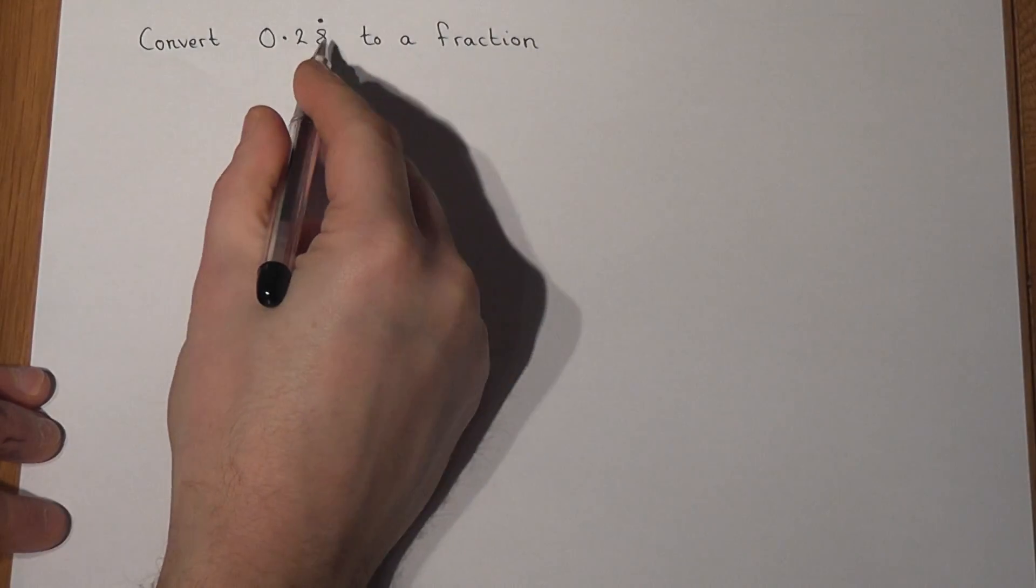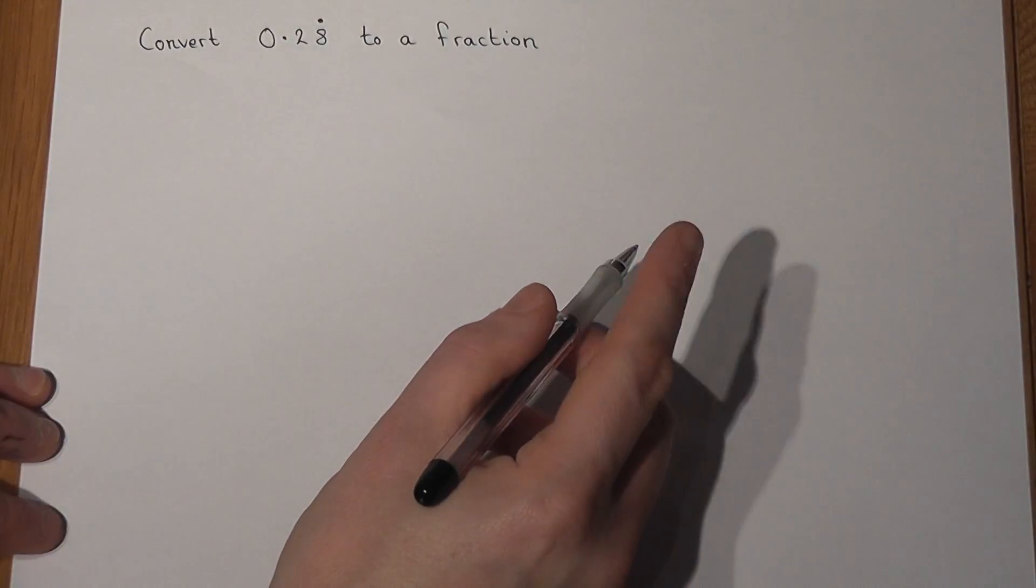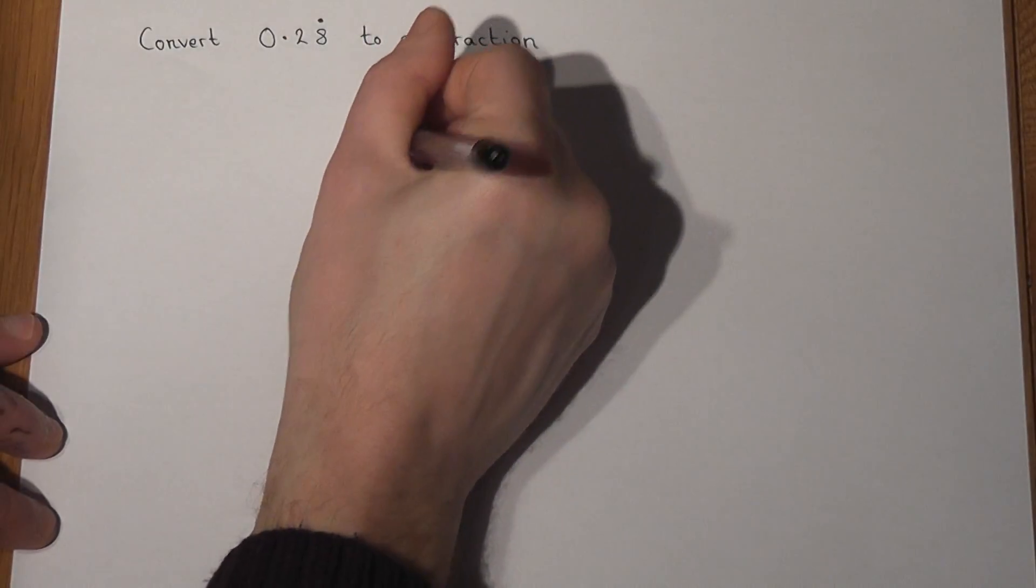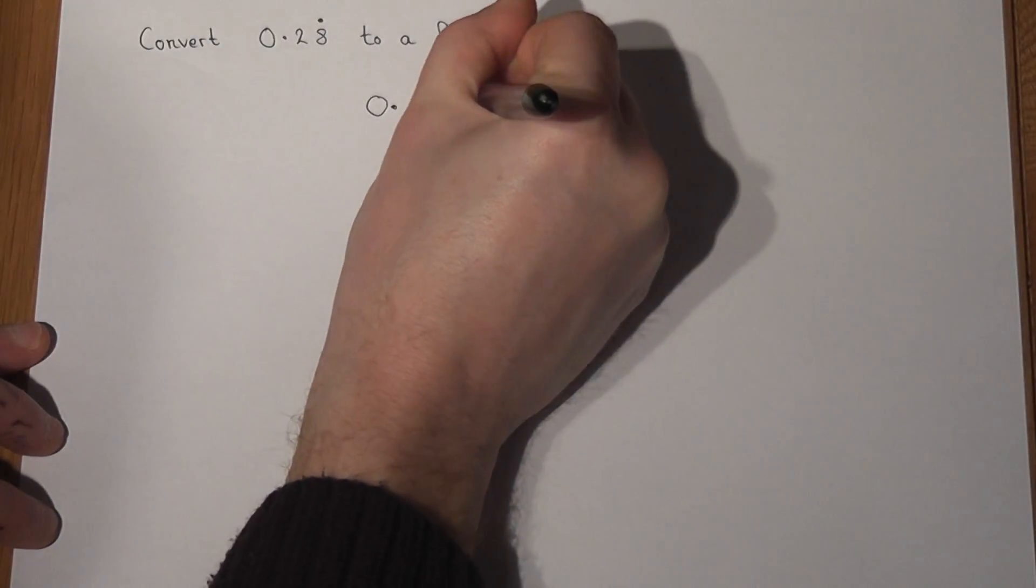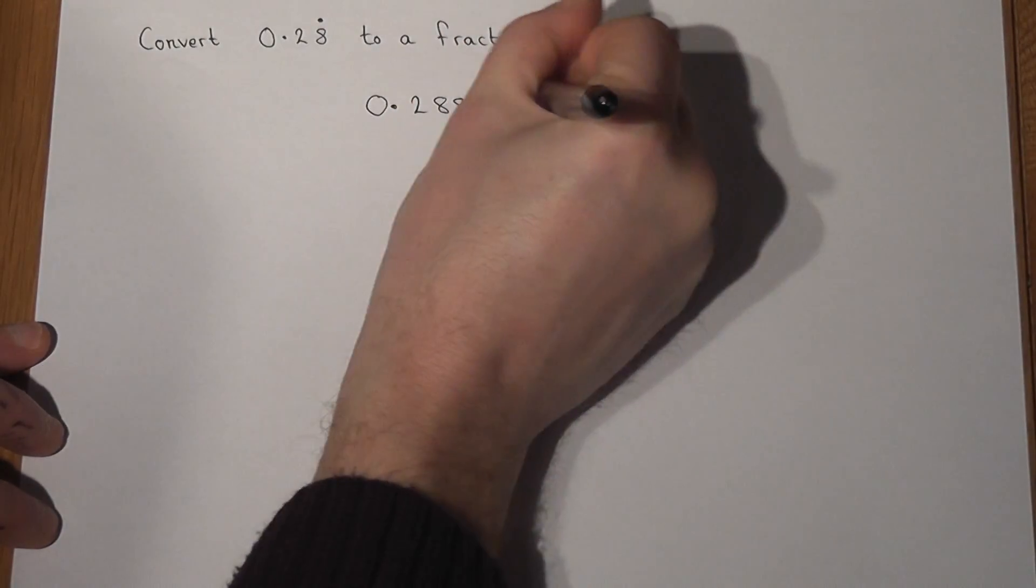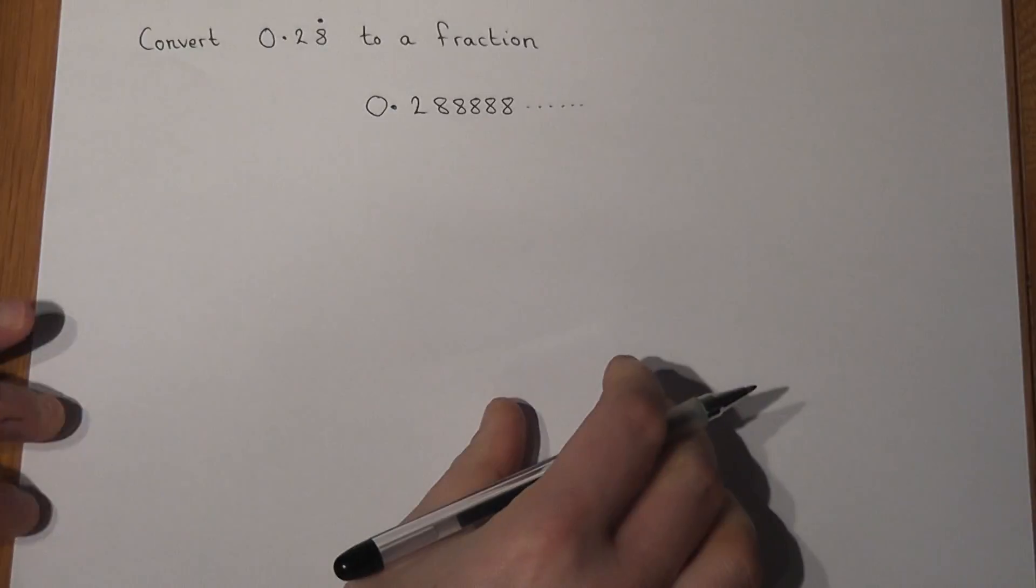So 0.28 recurring, the dot is just above the eight, which means our number is 0.2 with a string of eights after it, which of course never end.